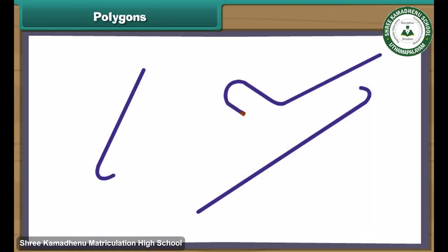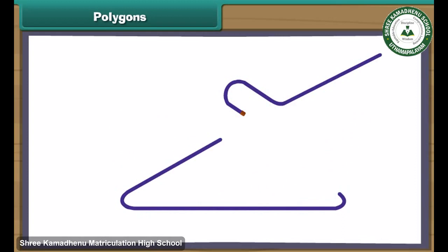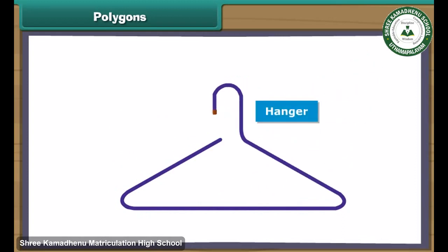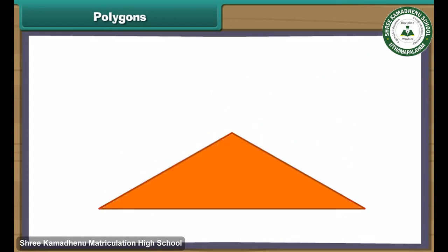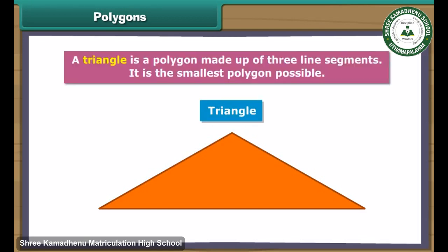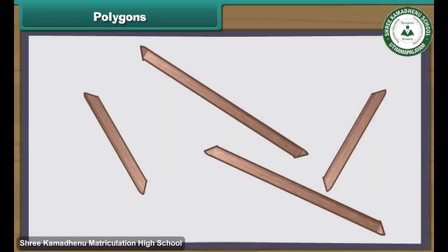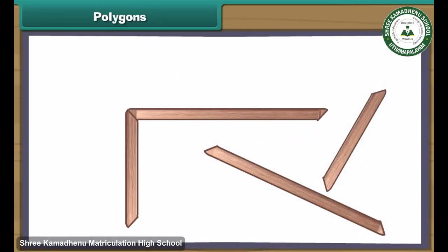We take three pieces of plastic and join them to form a towel hanger. We have created a triangle. A triangle is a polygon made up of three line segments. It is the smallest polygon possible.